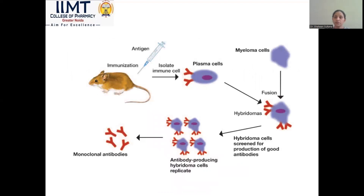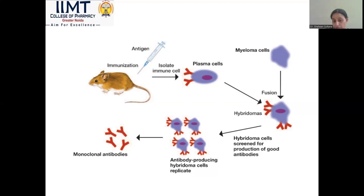To produce monoclonal antibodies: first, you immunize the animal; then you isolate the immune cells. The myeloma cell is fused with the plasma cell to produce hybridomas. Hybridomas are screened for production of a good antibody. Antibody-producing hybridomas are then selected and you obtain monoclonal antibodies.